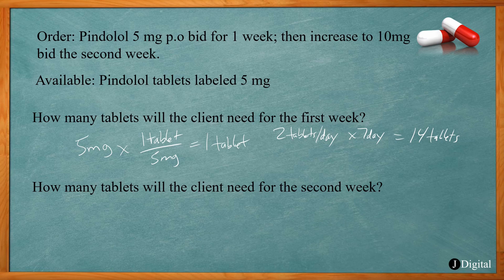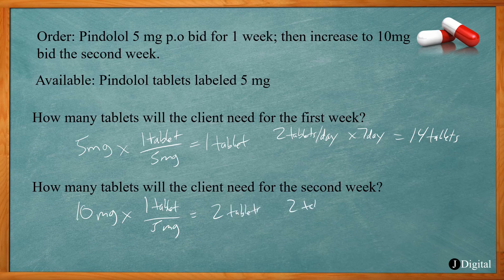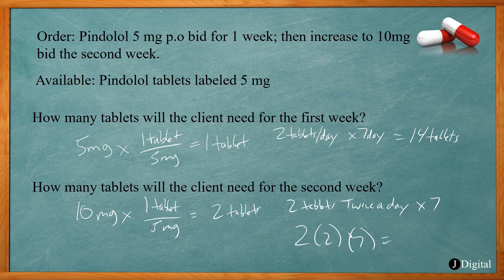For the second week the dosage increases to 10 milligrams twice a day. We calculate: 10 milligrams times one tablet over 5 milligrams — 10 divided by 5 is 2, so 2 tablets per dose. Two tablets twice a day for 7 days: 2 times 2 times 7 equals 28 tablets needed for the second week.